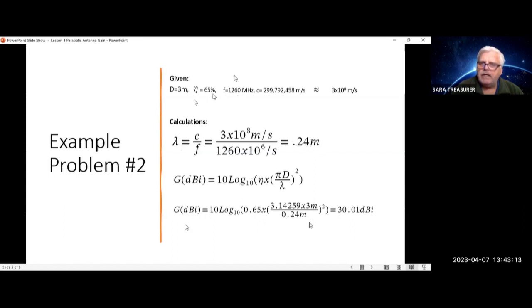And your gain, plug that all the way through, is equal to 30 dBi. So you get almost a 10 dBi bump by increasing the efficiency and increasing the diameter to 3 meters from a 1 meter dish.